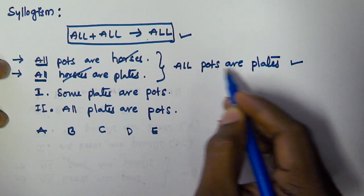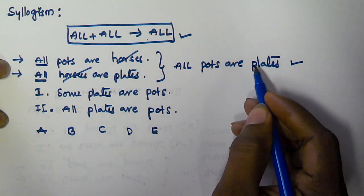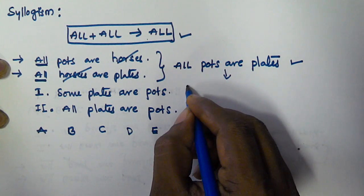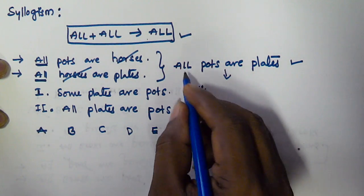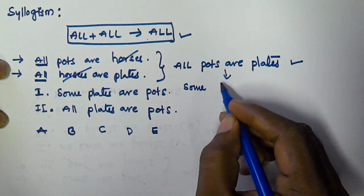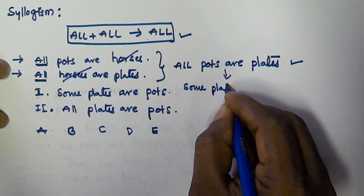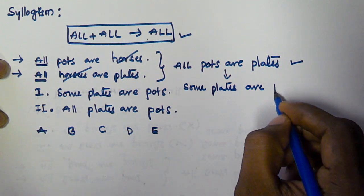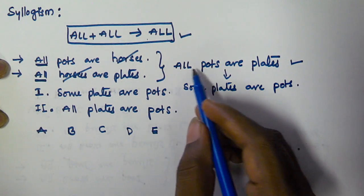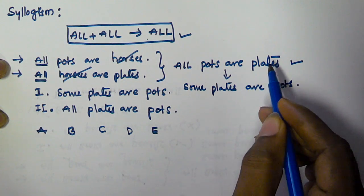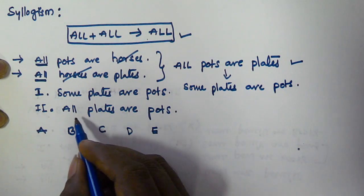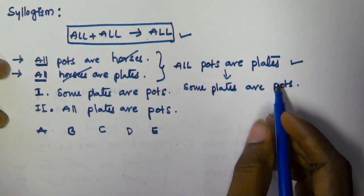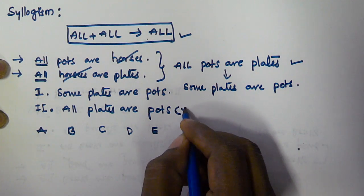From the actual conclusion 'All parts are plates,' if we interchange parts and plates, 'all' will become 'some.' So from this we can derive: 'Some plates are parts' — where 'all' becomes 'some,' the predicate becomes the subject, and the subject becomes the predicate. That's why the second conclusion is false.